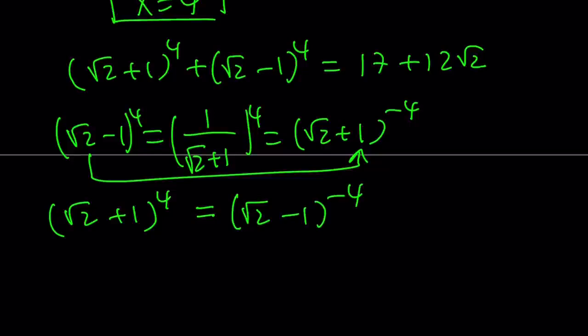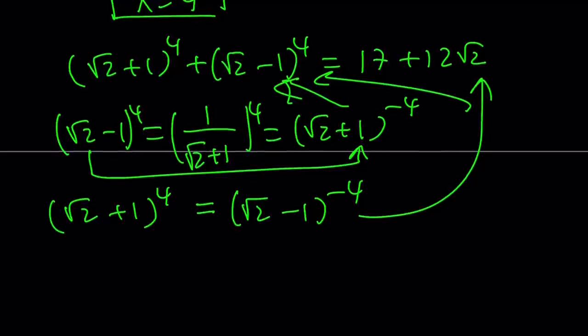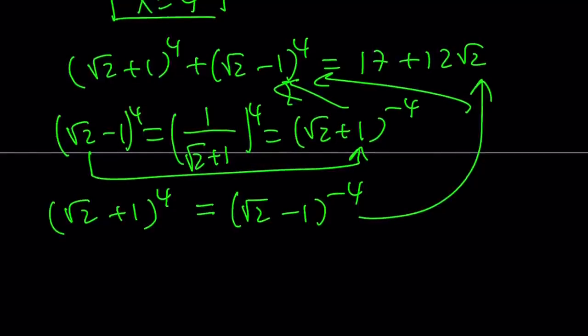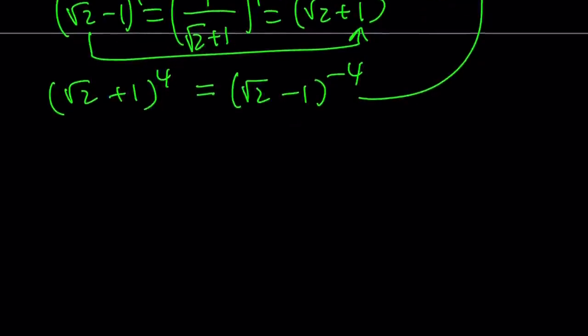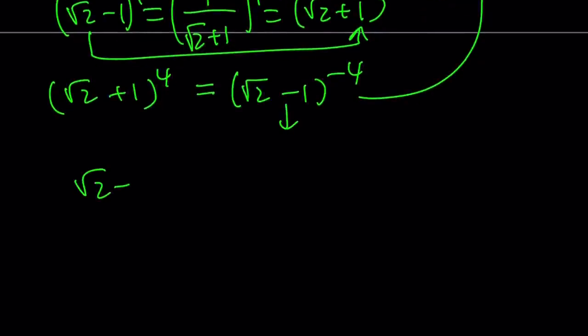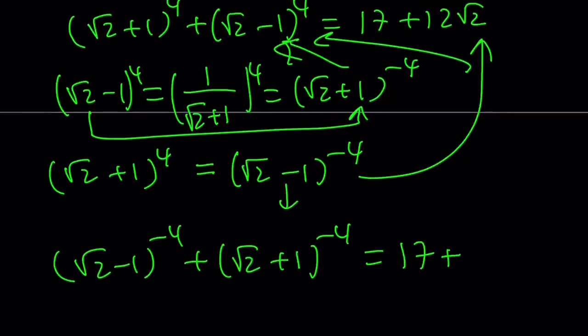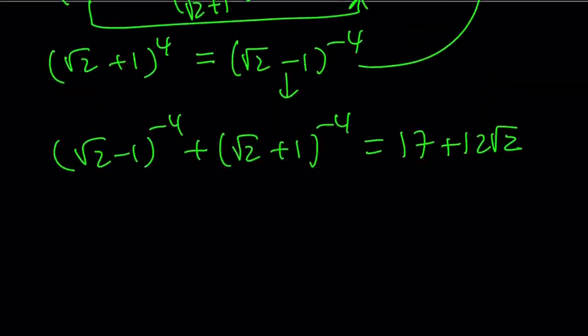Now, let's go ahead and replace these here. And I mean on the left-hand side. In both places, replace square root of 2 plus 1 to the fourth power with this, which is root 2 minus 1 to the power of negative 4. And the other one with root 2 plus 1 to the power of negative 4. And this sum is still the same, right? Because the left-hand sides are the same, so the right-hand side also stays the same.